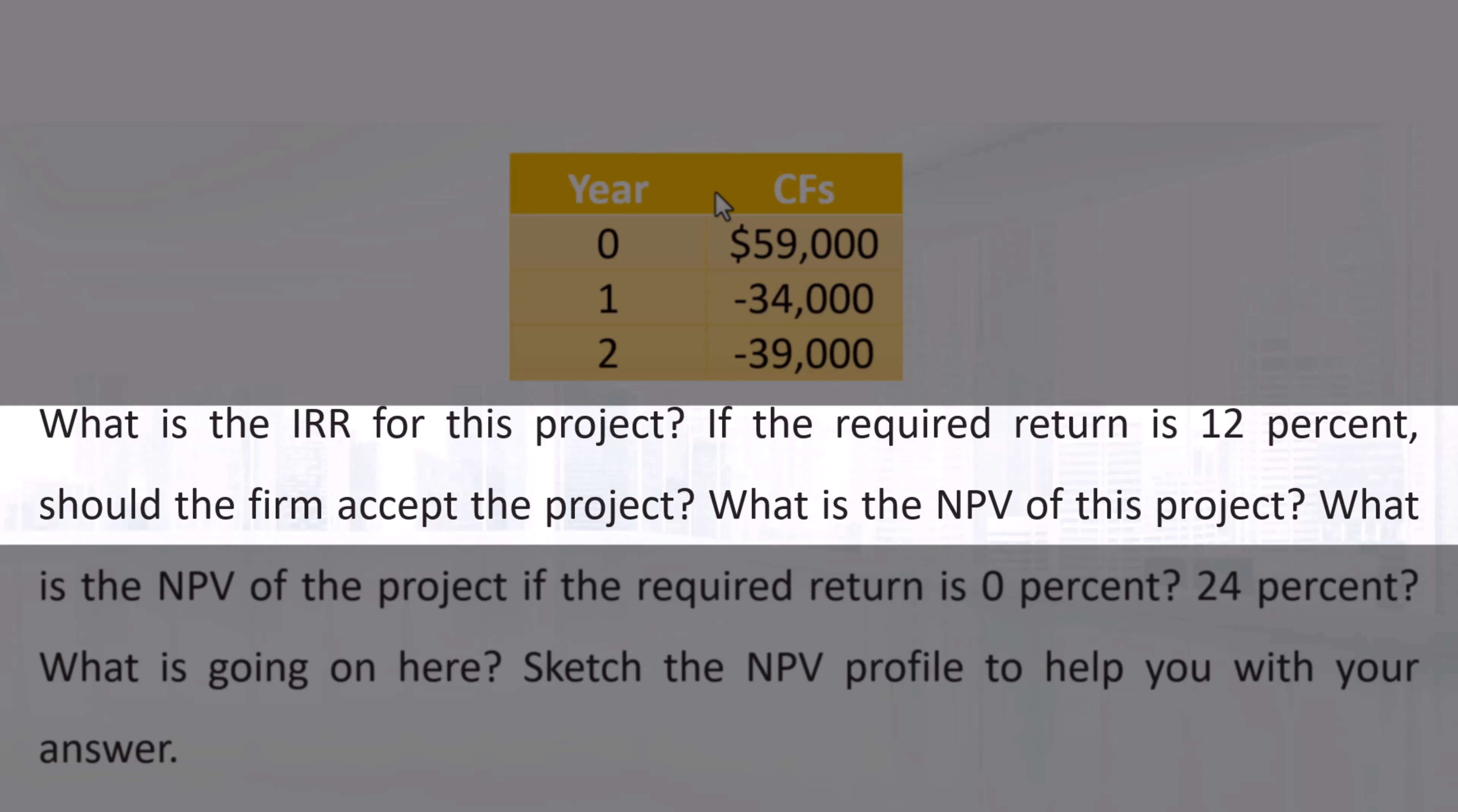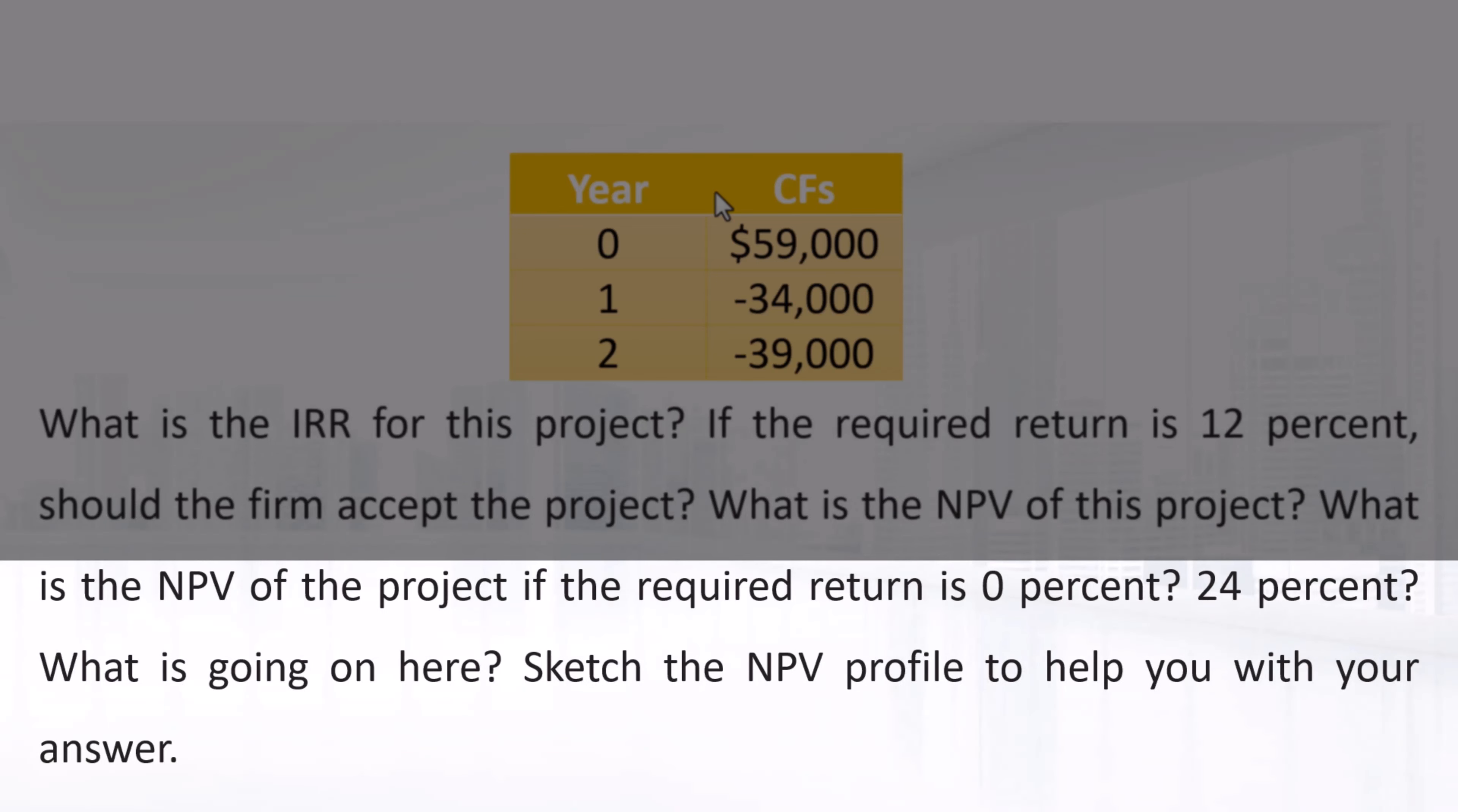What is the IRR of this project? If the required return is 12%, should the firm accept the project? What is the NPV of this project? What is the NPV of the project if the required return is 0%? 24%? What is going on here? Sketch the NPV profile to help you with your answer.